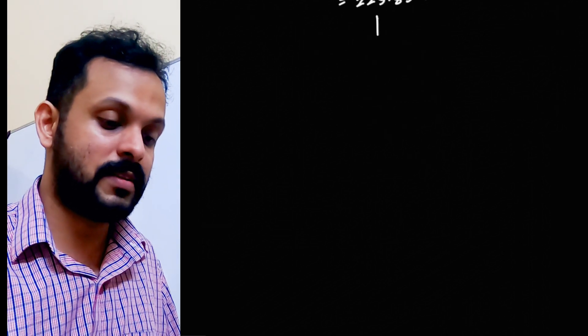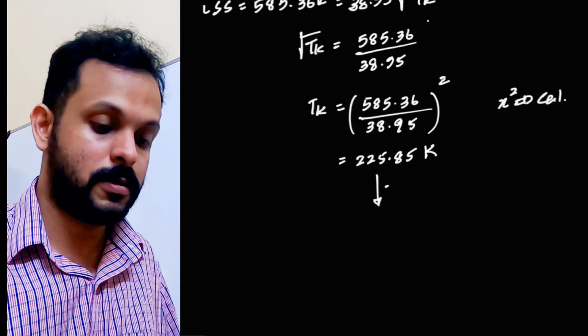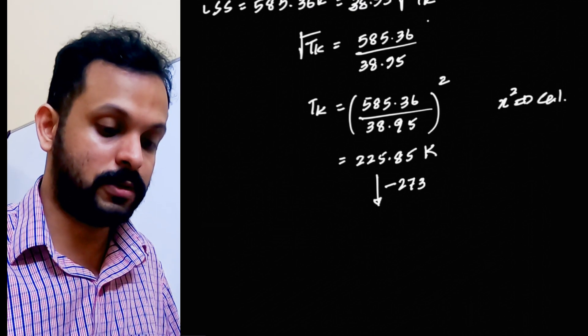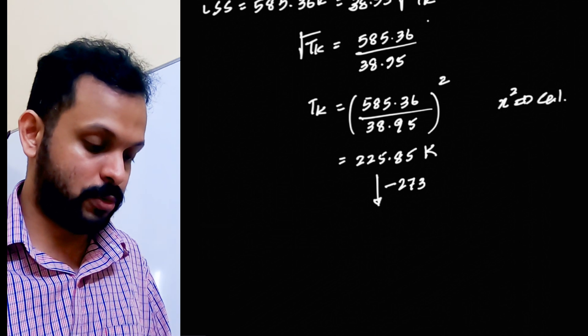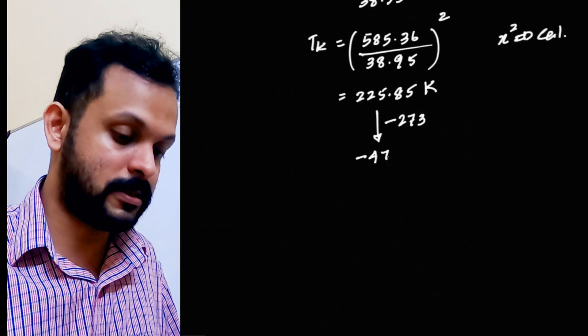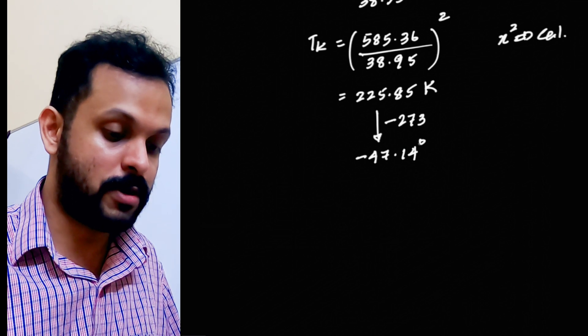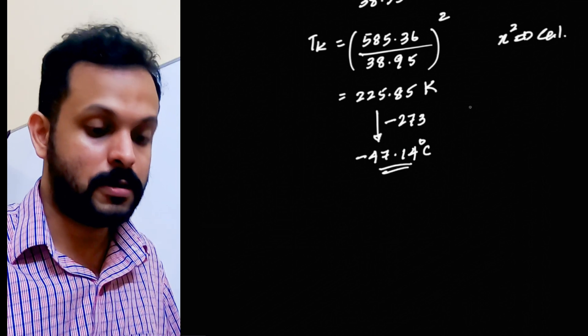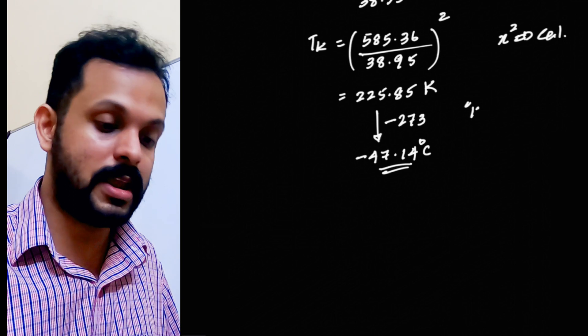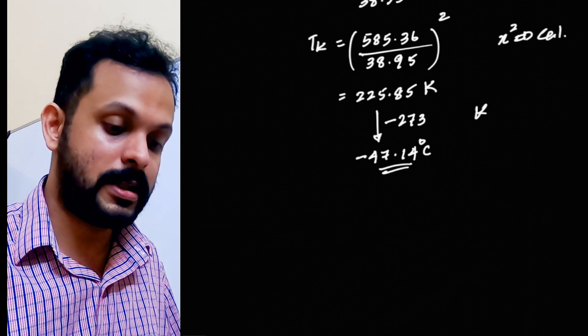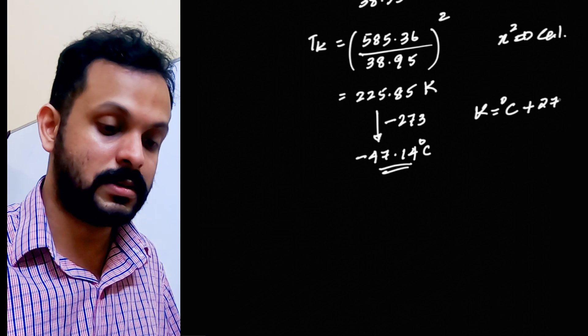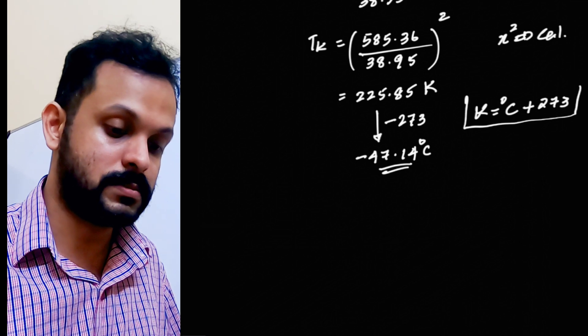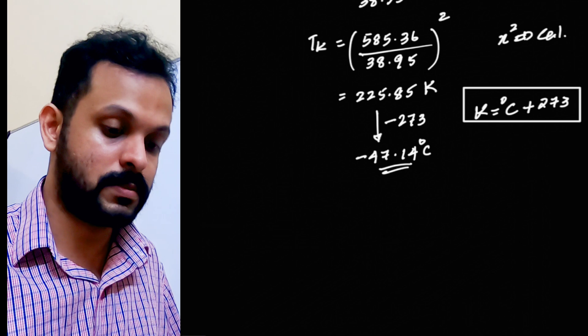Now, if you remove 273 from this, because all the lapse rates are given in degrees Celsius, not in Kelvin. So if you remove 273 from this, you will be getting minus 47.14 degrees Celsius. The basic relation is temperature in Kelvin is equal to temperature in degrees Celsius plus 273.